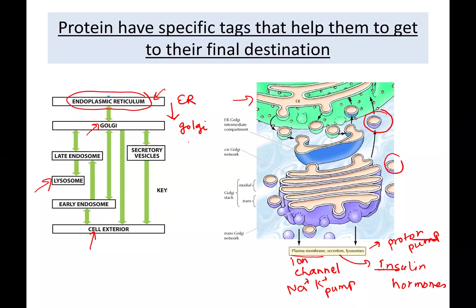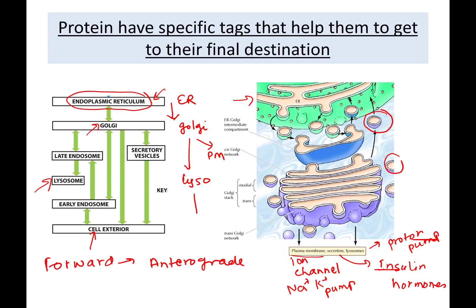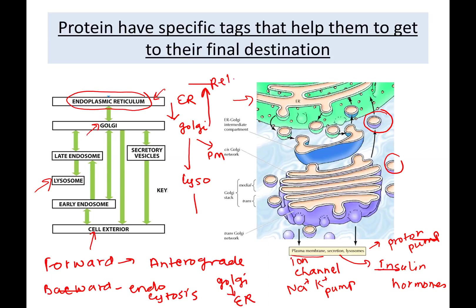Forward transfer — from ER to Golgi, to lysosomes, or from Golgi to the plasma membrane — is known as anterograde transport. When proteins are traveling backwards, such as during endocytosis or going from Golgi back to ER, this transport is called retrograde. Retrograde means backward transport. So how do proteins know where to go? There are different mechanisms for that.